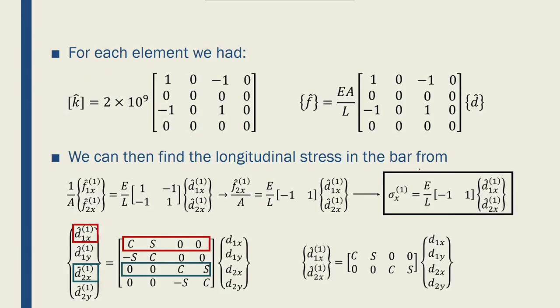Now, knowing that, I can come here and say I had the local stiffness matrix for each truss element, written like this: 2 times 10 to the 9, [1, 0, minus 1, 0...]. This is a 4 by 4 matrix.